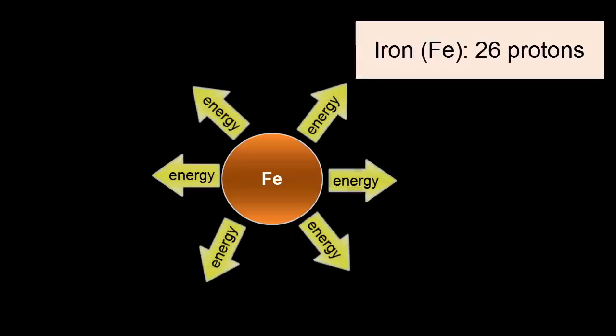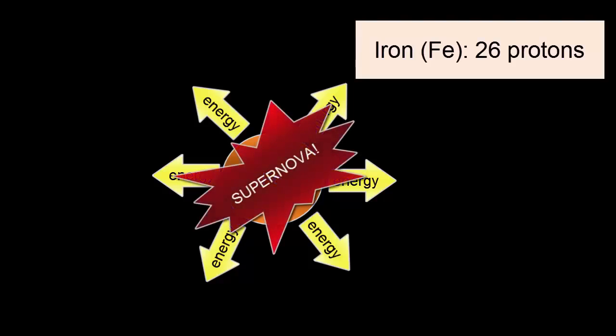By the time fusion produces iron, 26 protons, so much energy is produced within the center of a star that it can no longer be contained, and the star explodes in a supernova.